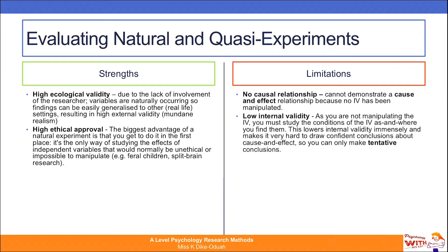Also, natural and quasi experiments are low in internal validity. As you are not manipulating the independent variable, you must study the conditions of the independent variable as and where you find them. This lowers internal validity immensely and makes it very hard to draw confident conclusions about cause and effect — you can only make tentative conclusions. An example for low internal validity would be split brain research by Sperry and Gazzaniga.